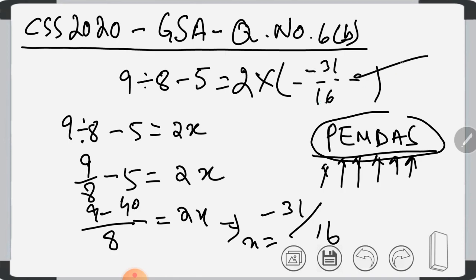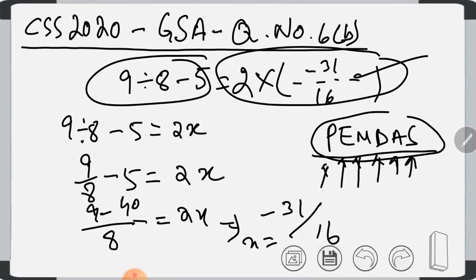Now we solve the second part. It contains five parts. Second part is 3 multiplied by 9 minus 14 is equal to 24 minus parenthesis.